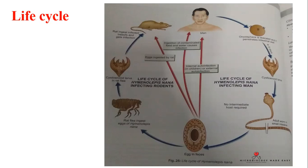After ingestion of infected eggs, they enter the intestine where the oncospheres are liberated. These penetrate the intestinal wall villi, and within four to five days the cysticercoid larva is released. It develops into an adult worm with scolex, neck, and strobila containing approximately 200 mature proglottids. The gravid proglottids release eggs into the environment, enabling further infection via contaminated food, water, or auto-infection.